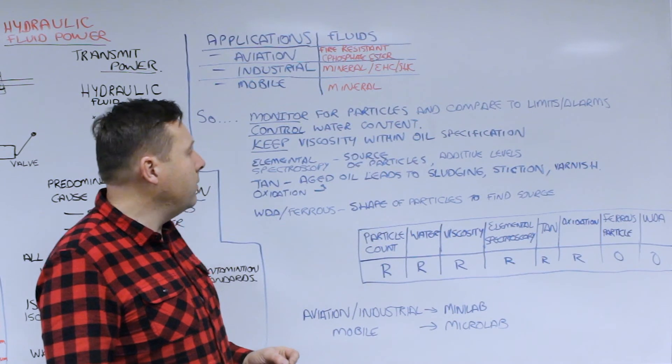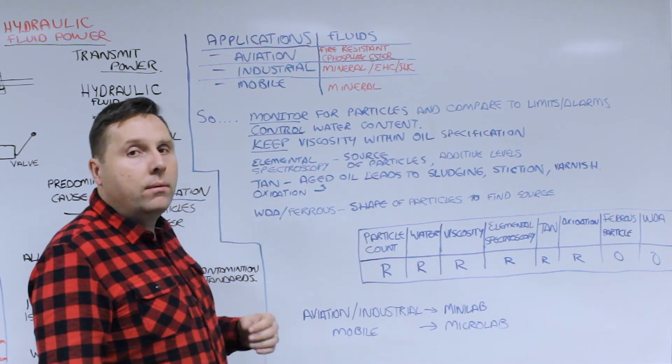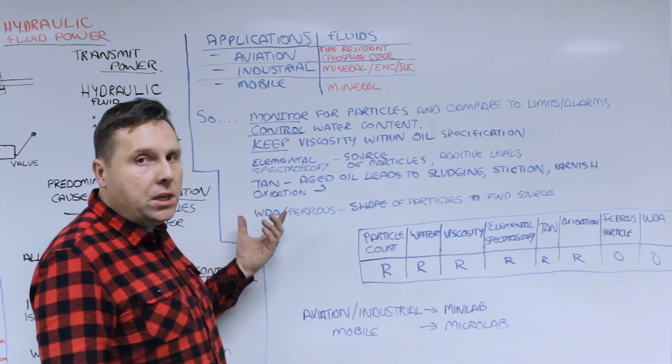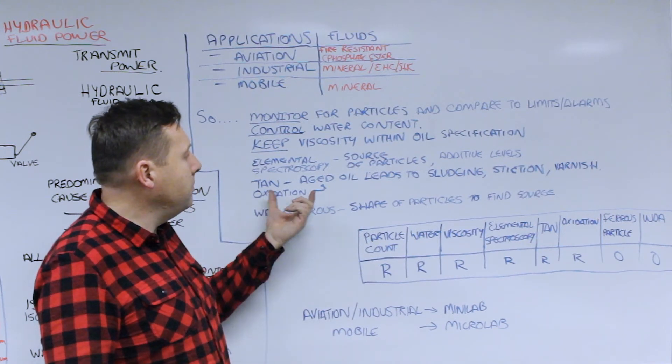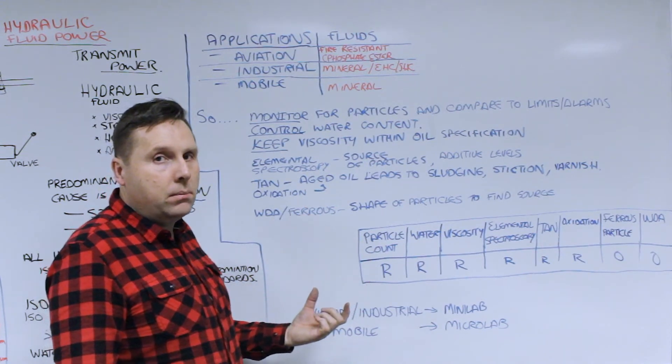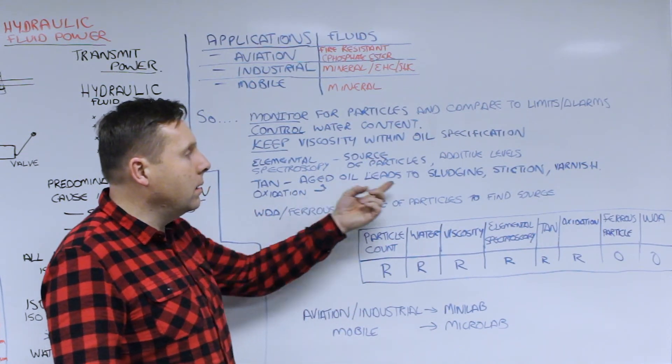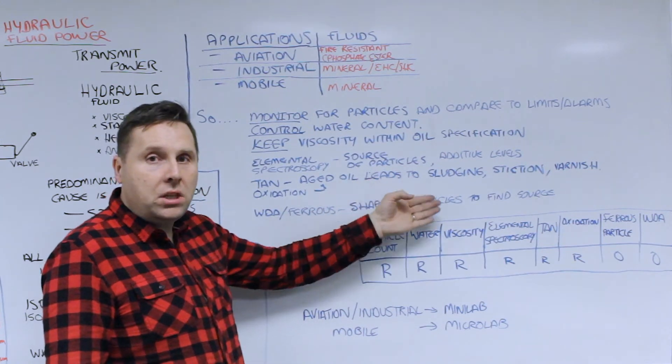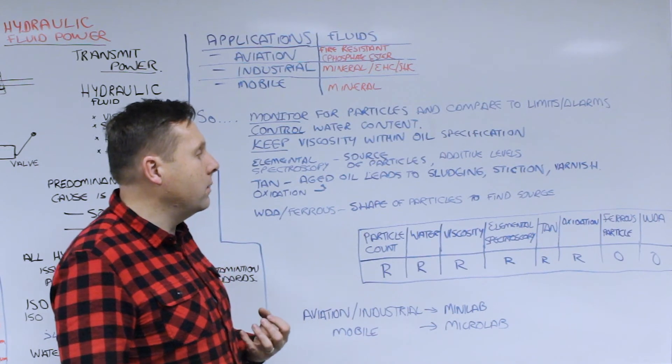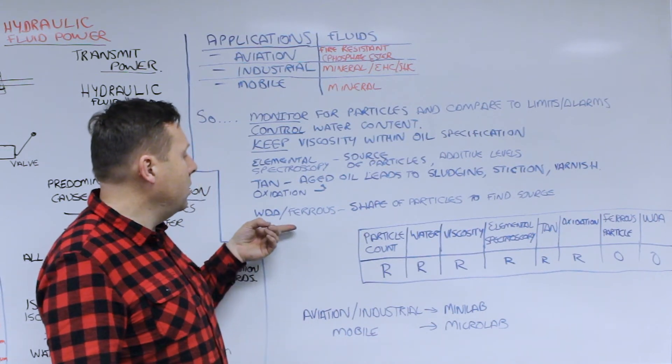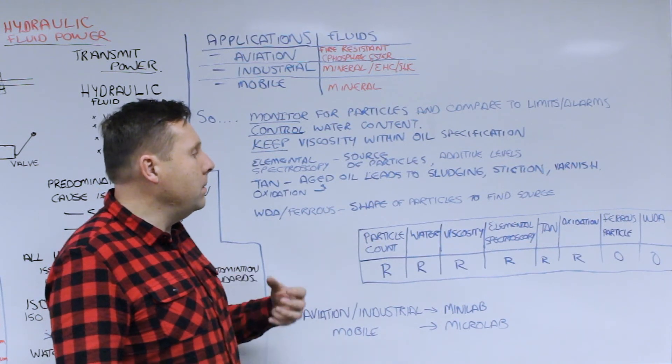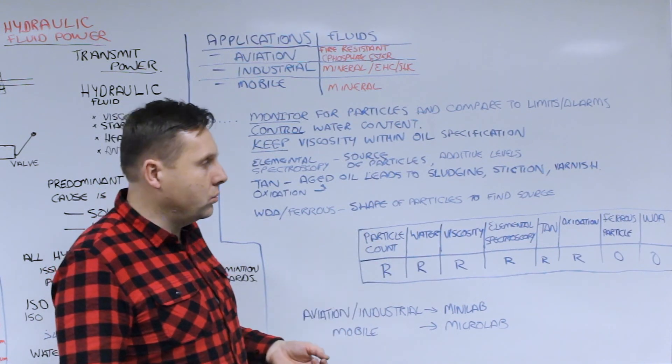Elemental spectroscopy is good to determine the source of the particles if you have an elevated particle count. Also good for determining additive levels. Acid number is very helpful for hydraulic systems, as well as oxidation by IR, because it basically helps you to determine if the oil is aged. If the oil is starting to break down you can have some sludging. You can have things known as stiction showing up or varnish showing up on servos and reservoirs. And of course optional always is wear debris analysis or ferrous particle analysis to identify the shape of particles in order to find the sources.